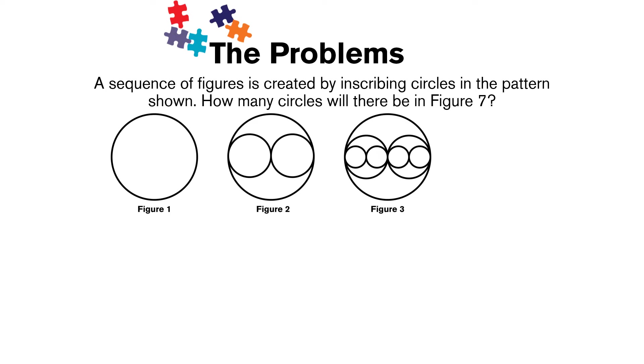So if you again drew out this pattern, you might have drawn something that looks like this. If you counted all those circles up, you would have gotten 15 circles. But it's going to be difficult to continue to draw these patterns, especially because these circles are starting to get pretty tiny, and it's going to be difficult to even get them all in there, especially as we're getting out to figure 7. So let's do what we did in the last one and try to establish a pattern here.